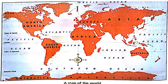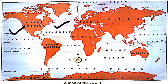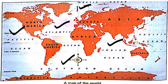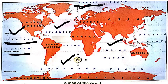How many oceans are there? There are five oceans: Pacific Ocean, Atlantic Ocean, Indian Ocean, Southern Ocean, and Arctic Ocean. The Pacific Ocean is the largest ocean. The Arctic Ocean is the smallest ocean.